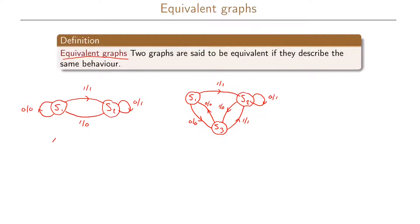Now as an example, let's say we have the input sequence 1,0,0,1,1,0 in our first graph. Assuming we start in S1, the output will be: first a 1 and we go to S2, then a 1 and we stay in S2, again a 1 and we stay in S2, then output 0 and we go to S1, then output 1 and we go back to S2, and finally output 1 and we stay in S2.